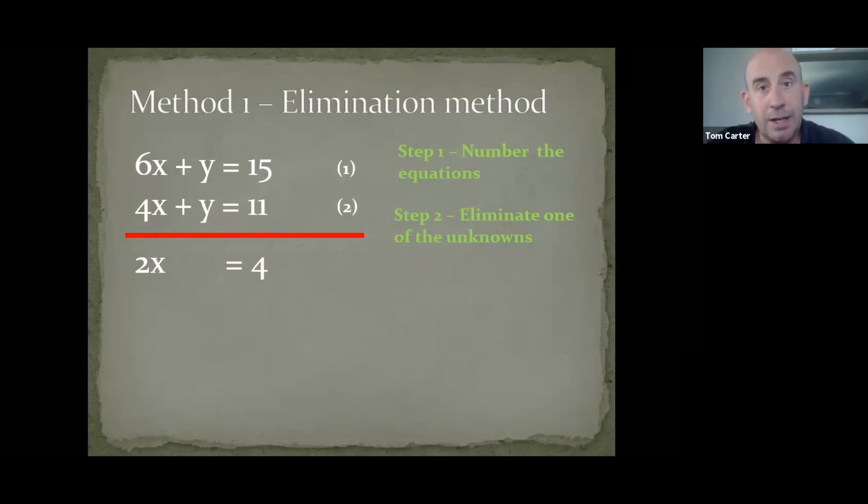Now, you can only really solve these equations when you've got one unknown, as in one letter in it. So, to finish that, I can then solve for x. 2 times something is 4. That something must be 2. Okay, so we found the x.